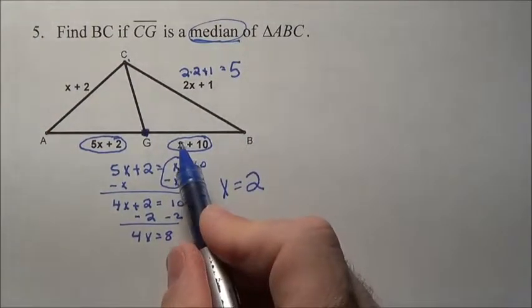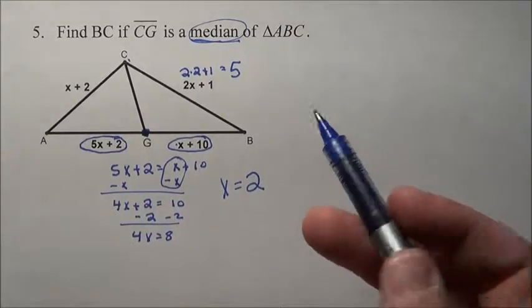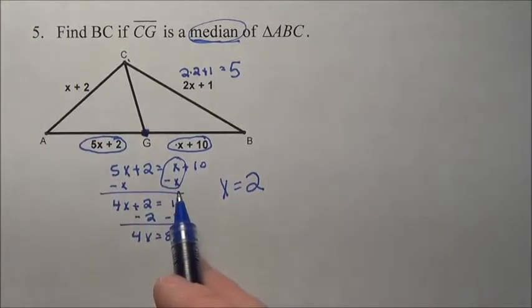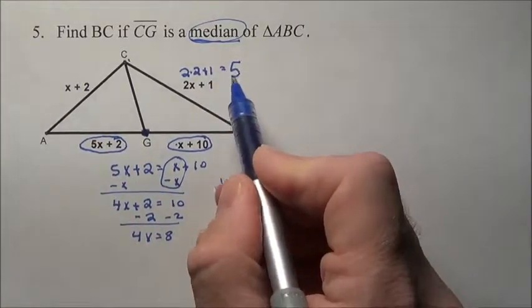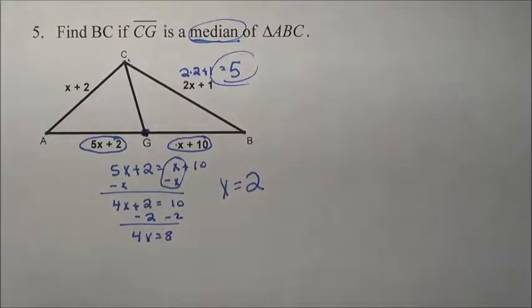And we could come back here and say, well, this guy is 12 and this is going to be 12 and this guy over here is going to be 4. Again, technically that's not a real possible triangle to even have. But that's okay because all we're trying to do is see if you know how to do the problem and get the answer. In this case, BC's length is 5 units.